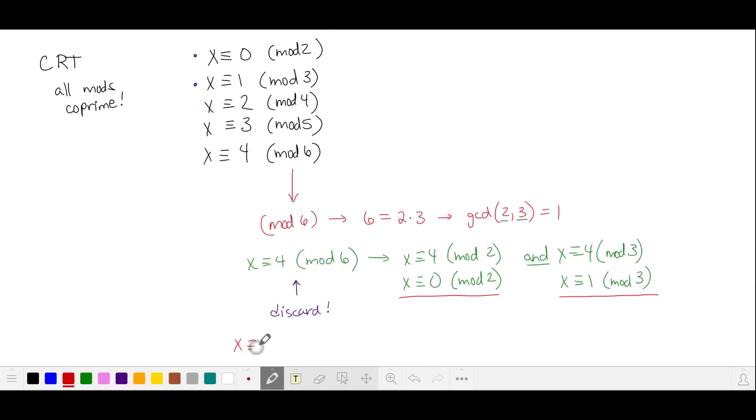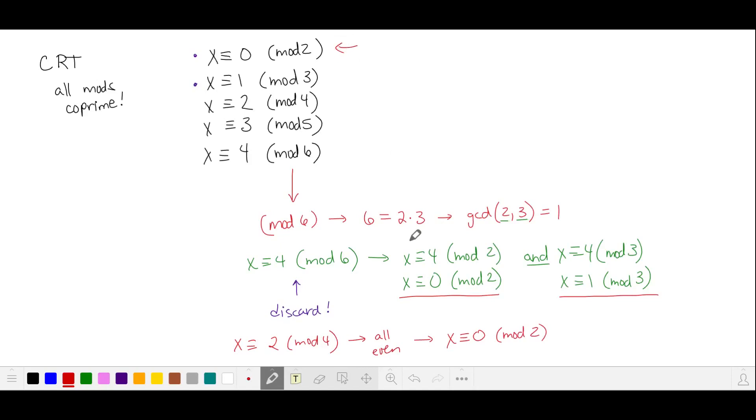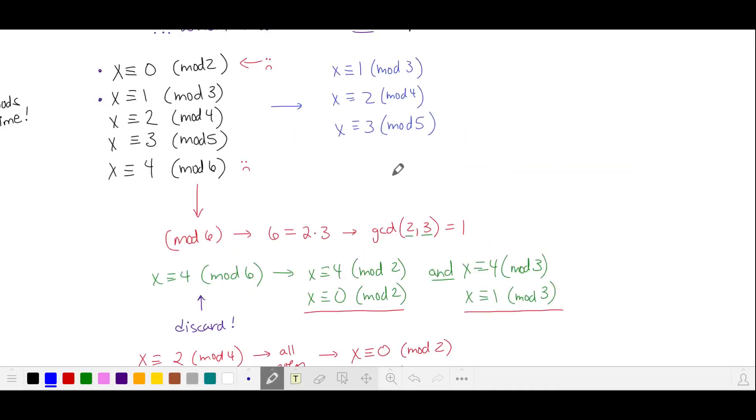Let's take a look at the requirement that x is two in mod four. All of these numbers are even, which we already have in our first equivalence. But this is the more restrictive relationship, so we're going to keep this and discard the requirement that all numbers be even. Discarding these two, we have these three remaining equivalences, and all the mods are co-prime, so we can solve.